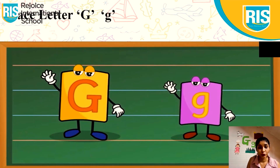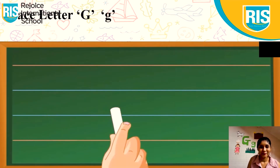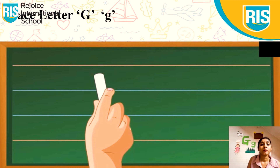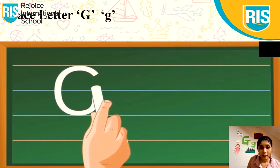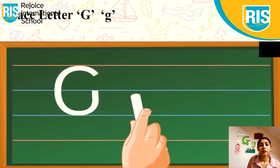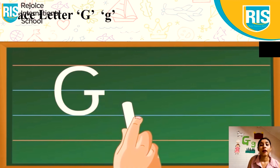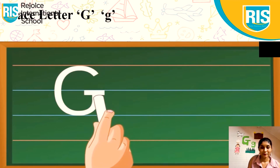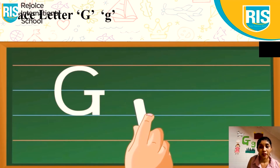So students, let us trace letter G. We will trace first uppercase G. Start from the top — first make a curve, go up, make a sleeping line, and then make a standing line. This is uppercase G.